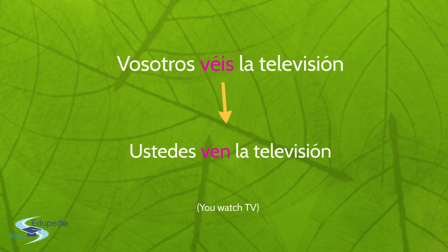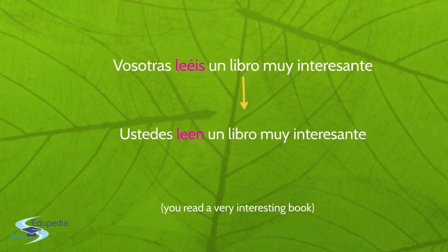Vosotros is conjugated with the second person plural, while ustedes is conjugated with the third person plural. For example: Vosotras leéis un libro muy interesante — you girls read a very interesting book. Ustedes leen un libro muy interesante — that's the formal way to say you read a very interesting book.